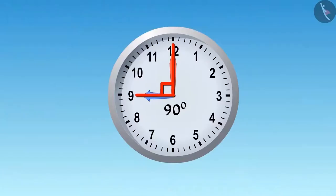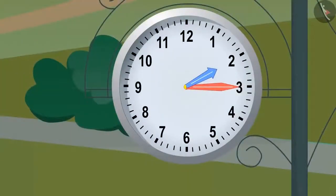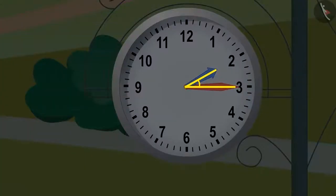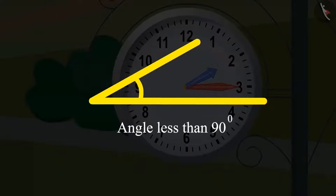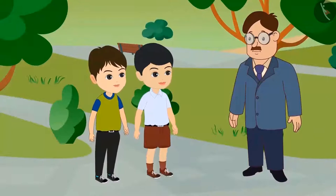Do you remember what we have learned about the angles formed in the clock? Yes, now the time is quarter past two. And if we look at the hands of the clock, we can see that they are making an angle less than 90 degrees. Is that correct, uncle?